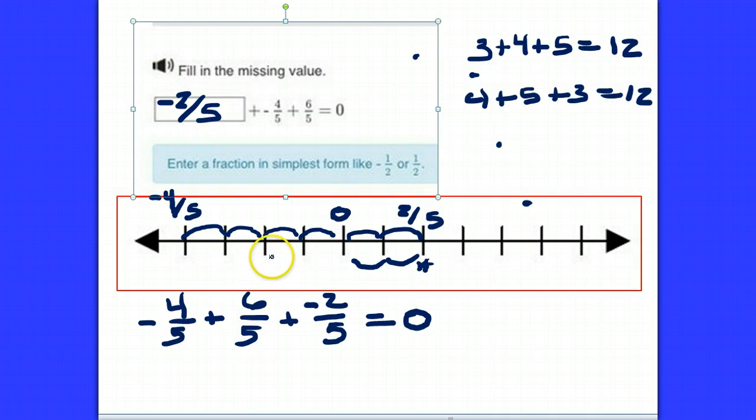So this time, let's start at negative 2 fifths. Let's start here, and let's work through the problem. Plus a negative 4 fifths, so that takes us back 1, 2, 3, 4, and we end up at negative 6 fifths. And then if we move up another 6 fifths, 1, 2, 3, 4, 5, 6, we end up back at 0.